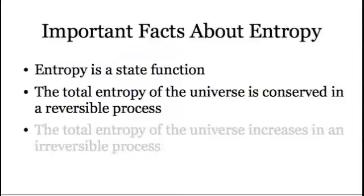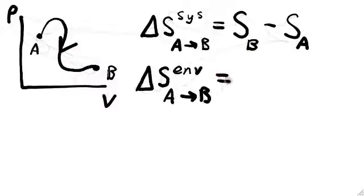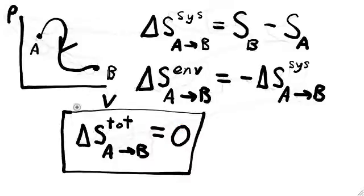The second fact is that the total combined entropy of both the system and the environment with which it exchanges heat remains unchanged in a reversible process. So if the transition from A to B is reversible, then the entropy change of the environment is equal to minus the entropy change of the system. This is only true for reversible processes.